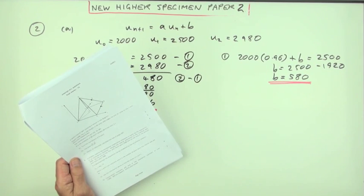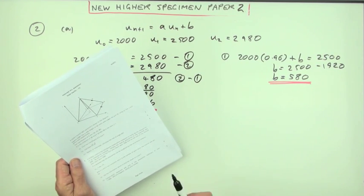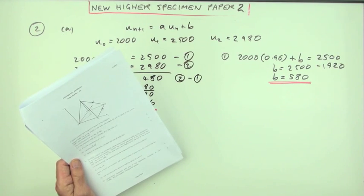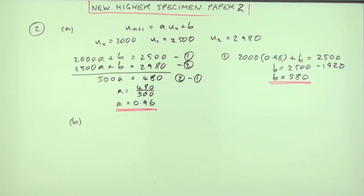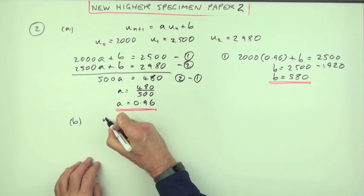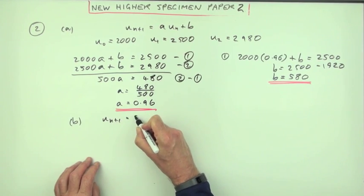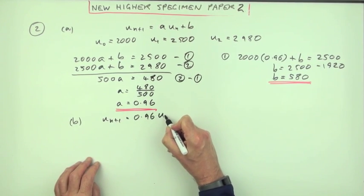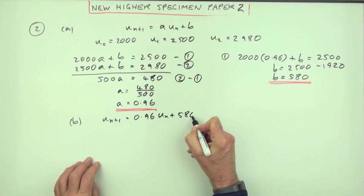And will that limit be more than 13,000? So you have to use that to justify your actions. Well, will there be a limit? Let's put this down again. I've got U(n+1) is 0.96 U(n) plus 580.